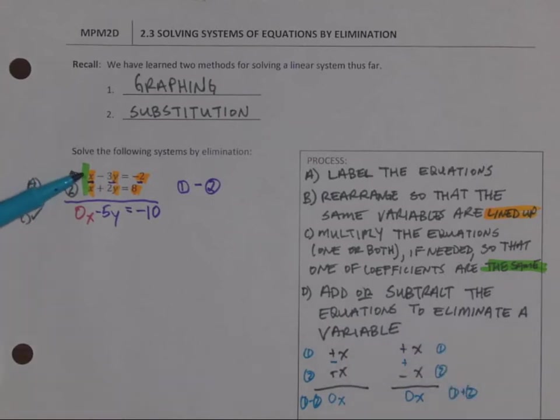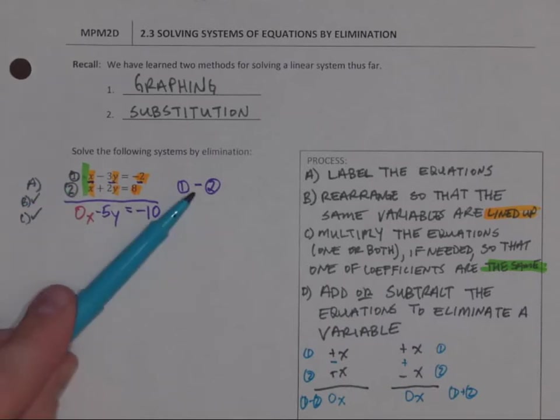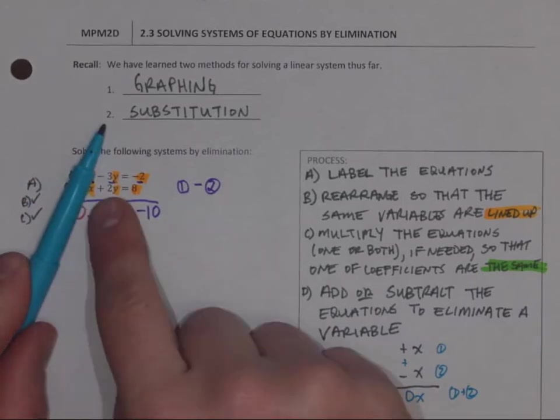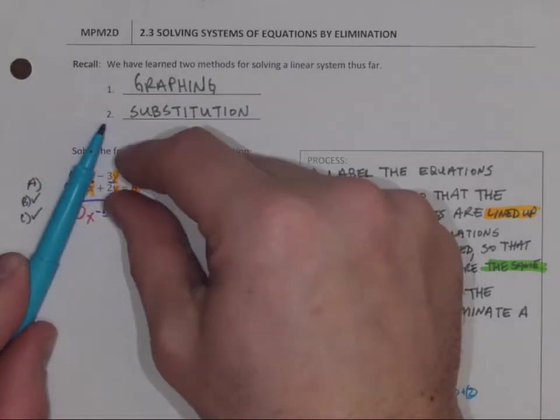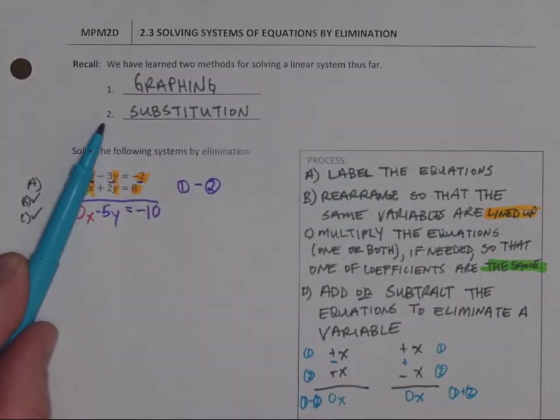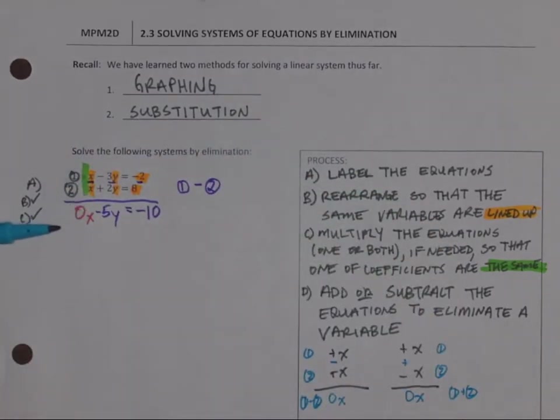If I look at that, same sign, subtract. Opposite signs, I would add them together to eliminate the Y. Now that I'm here, I can actually solve for my variable.